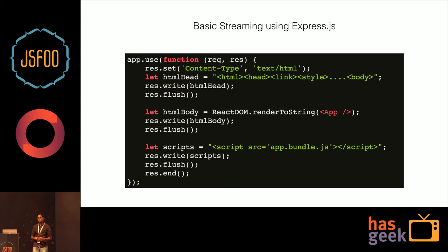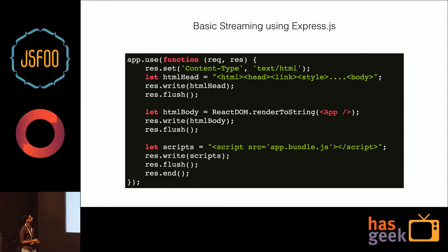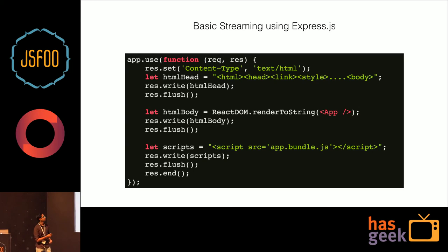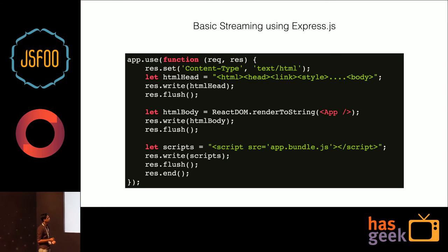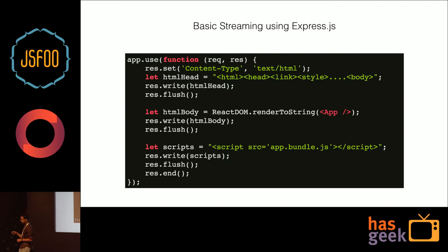This is how we do streaming using Express. In your route handler, you set your content type explicitly. Then you write your HTML head tag up to the opening body tag — which has all your link preloads and style tags — and you flush it to the user. At this point the HTML stream has opened, and this is essentially milliseconds after you have responded, since this part is all static. Then you do your whole server rendering — templating, Angular, React, whatever — and you write that, then write script tags and close your response. That's what some very basic streaming looks like.